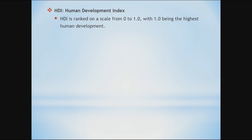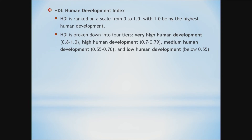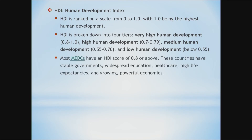Human Development Index. HDI is ranked on a scale from 0.1 to 1.0, with 1.0 being the highest human development. HDI is broken down into four tiers: very high human development — 0.8 to 1.0; high human development — 0.7 to 0.79; medium human development — 0.55 to 0.70; and low human development — below 0.55. Most MEDCs have an HDI score of 0.8 or above.